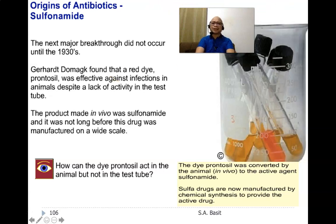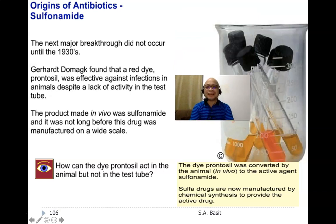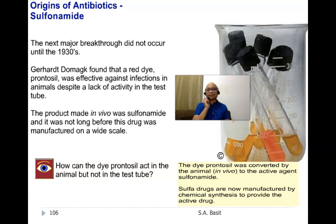One of the next major breakthroughs did not occur until the 1930s. Domagk discovered a red dye known as Prontosil, which was effective against infection in animals despite little activity in the test tube, meaning Prontosil is only effective in vivo. The product made in vivo was sulfonamide, and this drug was manufactured on a wide scale. Prontosil is otherwise known as the sulfa drugs.